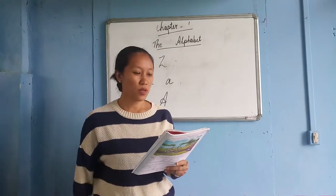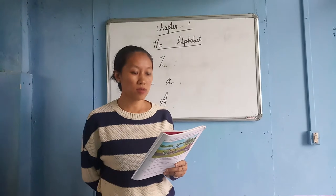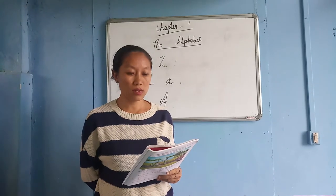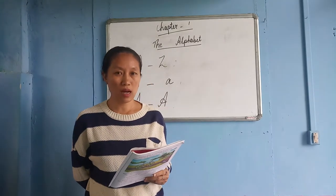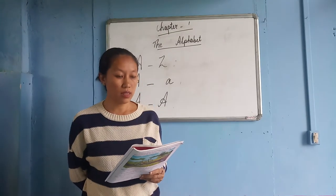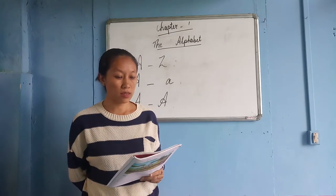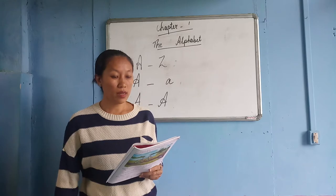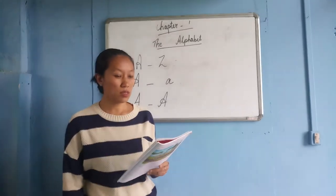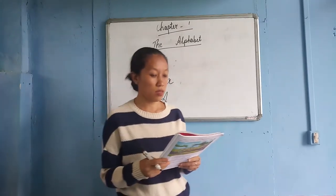The 26 letters of the English alphabet are divided into two parts. They are vowels and consonants.